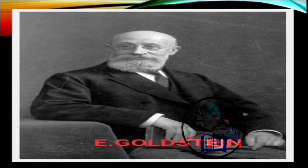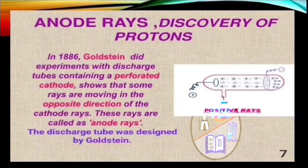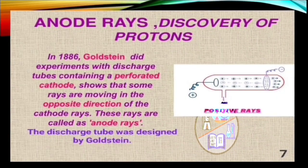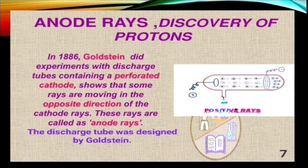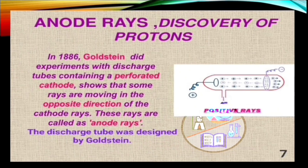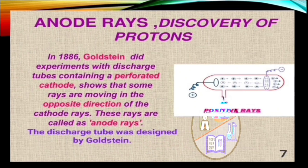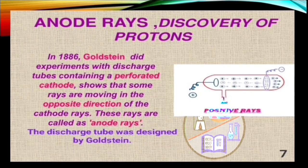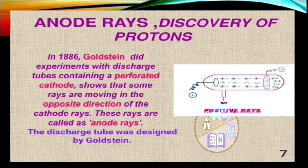Goldstein, a German physicist, in 1886, did experiments with discharge tubes containing a perforated cathode, shows that some rays are moving in the opposite direction of the cathode rays. And these rays were called as anode rays. The discharge tube taken was specially designed by Goldstein.